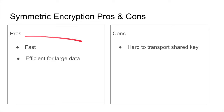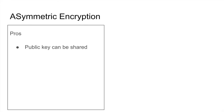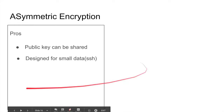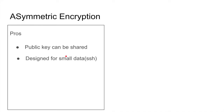For asymmetric encryption, the pro is that the public key can be shared freely — it's okay if someone gets it, because they can only use it to encrypt. As long as the private key stays with you, you're safe. You send people your public key so they can encrypt messages to you. You take their public key to encrypt messages back to them, and they decrypt with their private key. It was designed for small data.